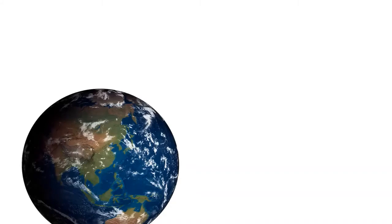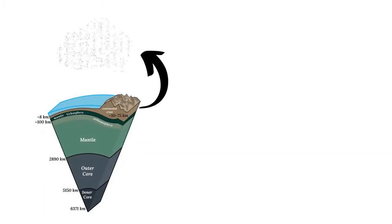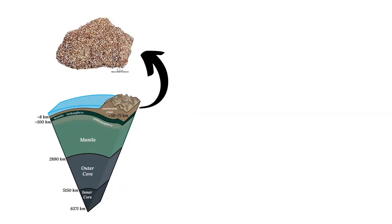Feldspar is a group of minerals that are the most abundant in the Earth's crust, with aluminum being one of the metals with high proportions. The primary source of aluminum is an ore called bauxite, typically found in various tropical and subtropical regions such as the Philippines.